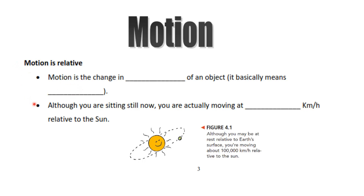Now, motion is relative. Although you are sitting still now, you are actually moving at 100,000 kilometers per hour relative to the sun. So although you are sitting down watching this video, relative to the sun, the earth is moving at 100,000 kilometers per hour.